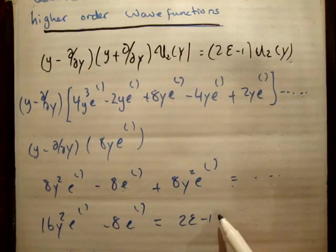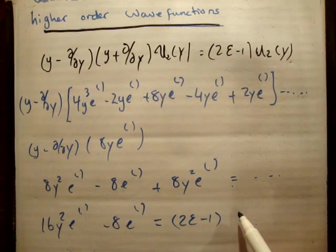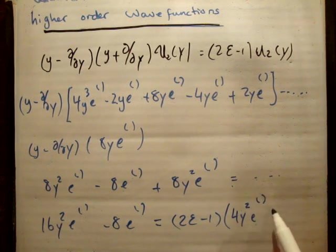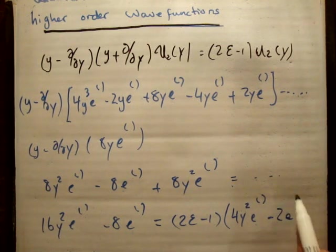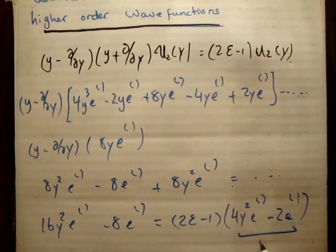This equals twice epsilon minus 1 times 4y squared e to the minus y squared over 2 minus 2 times e to the minus y squared over 2. Notice this here is u2.